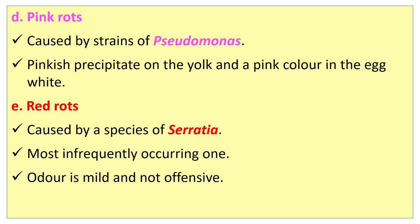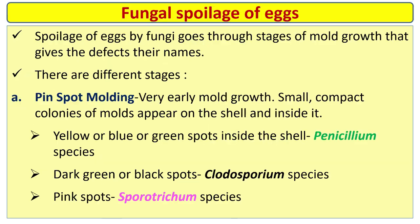Pink rots are caused by strains of Pseudomonas, producing a pinkish precipitate on the yolk and pink color in the egg white. Red rots are caused by a species of Serratia — the most infrequently occurring one — and odor is mild and not offensive. Pink rot is caused by Pseudomonas; red rot is caused by Serratia.